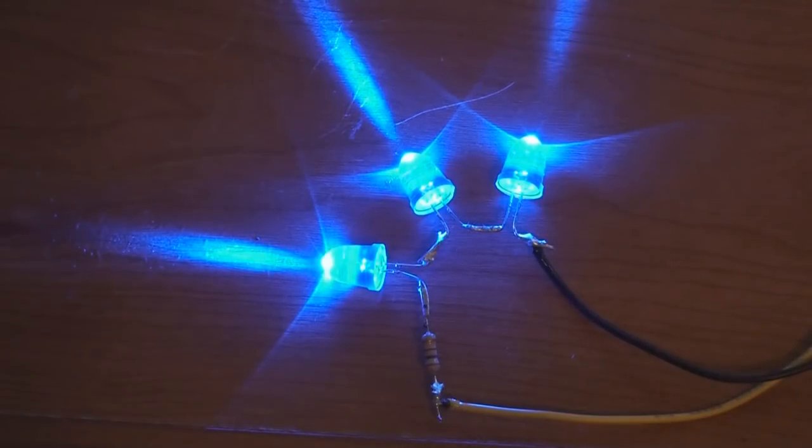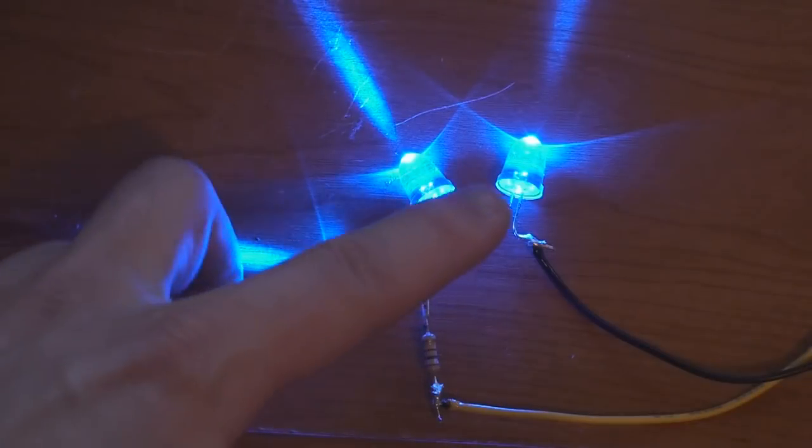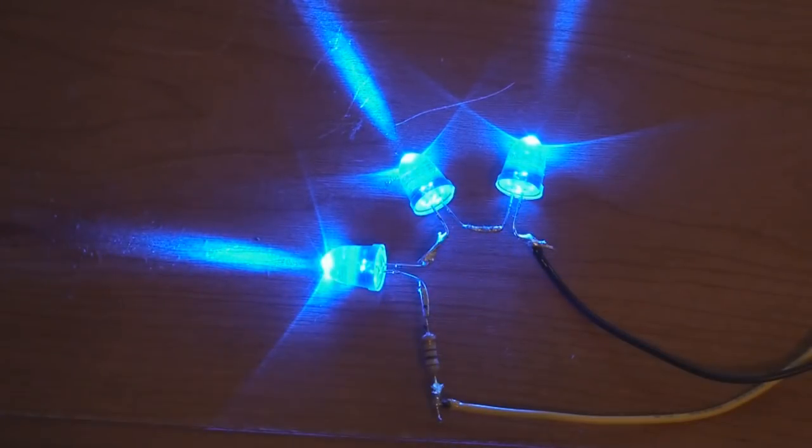Once we got all soldered up there, what it looks like - one thing I recommend doing is just putting electrical tape around all the exposed wire and LED legs. It'll prevent it from any shorting out if anything touches that.